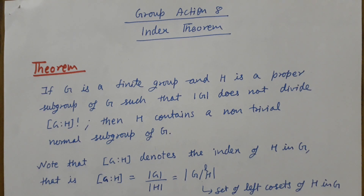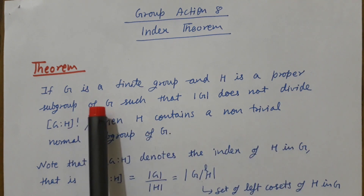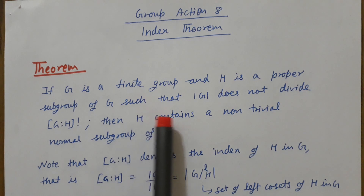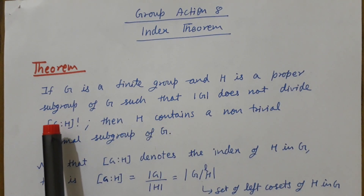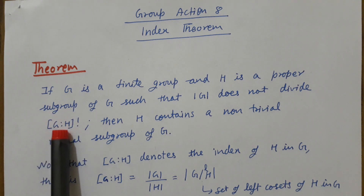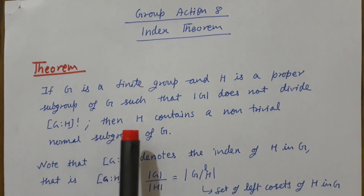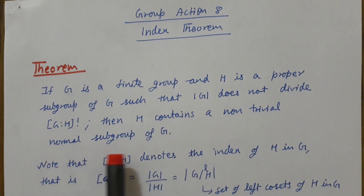Let us start with the statement of the theorem. If G is a finite group and H is a proper subgroup of G such that the order of G does not divide the factorial of the index of H in G, then H contains a non-trivial normal subgroup of G.